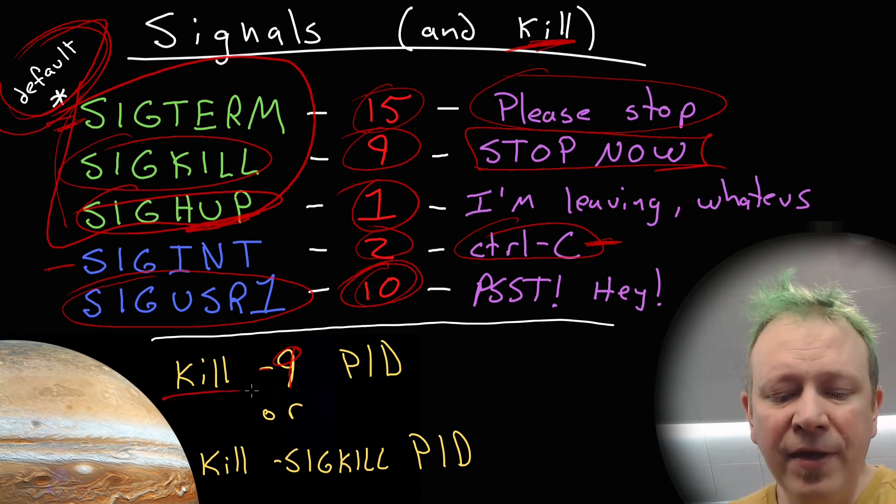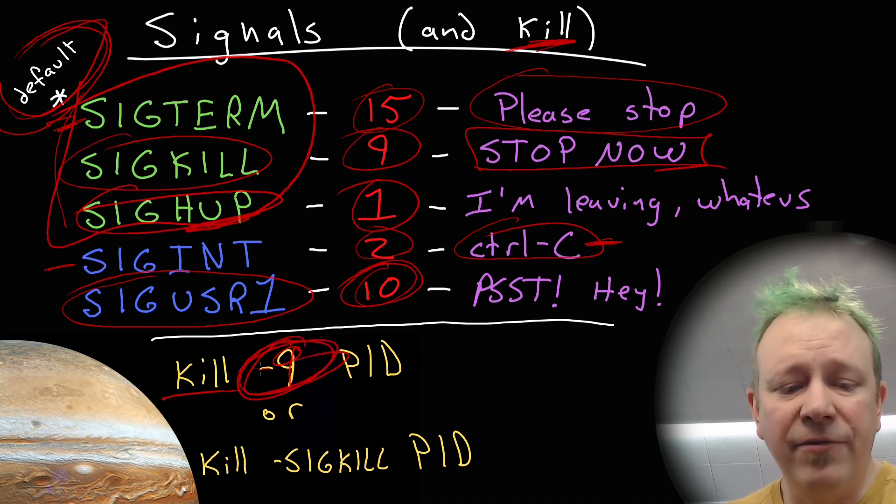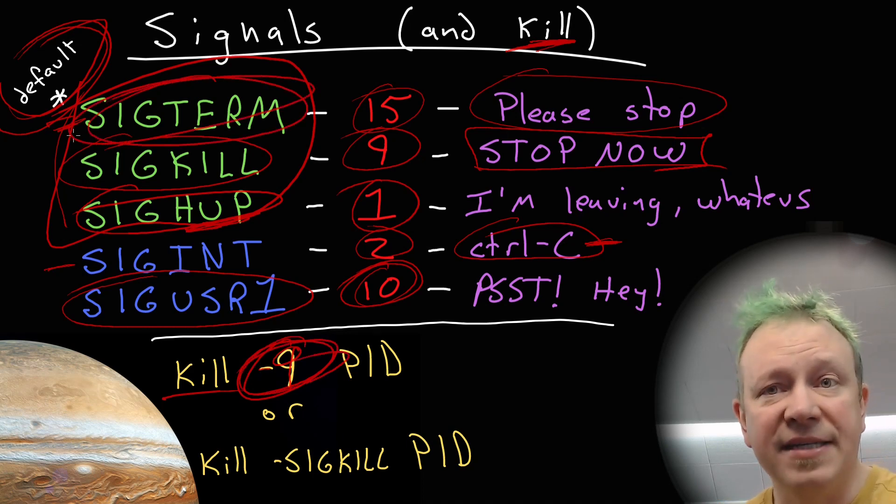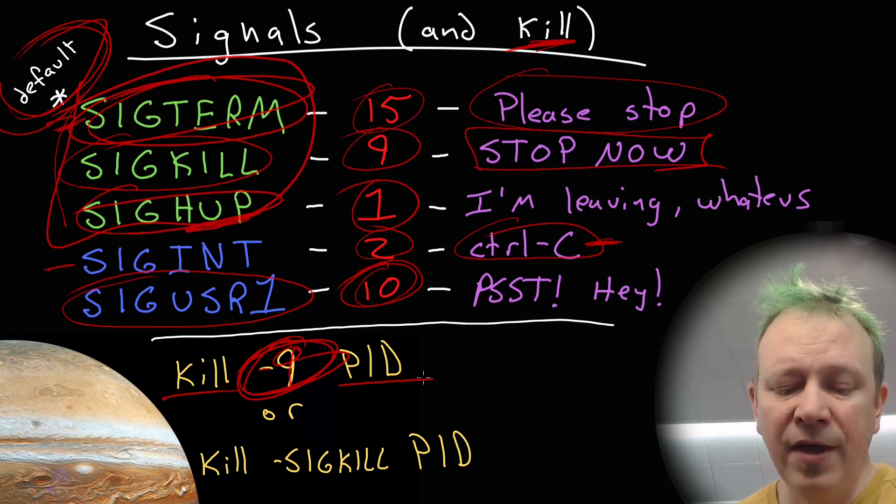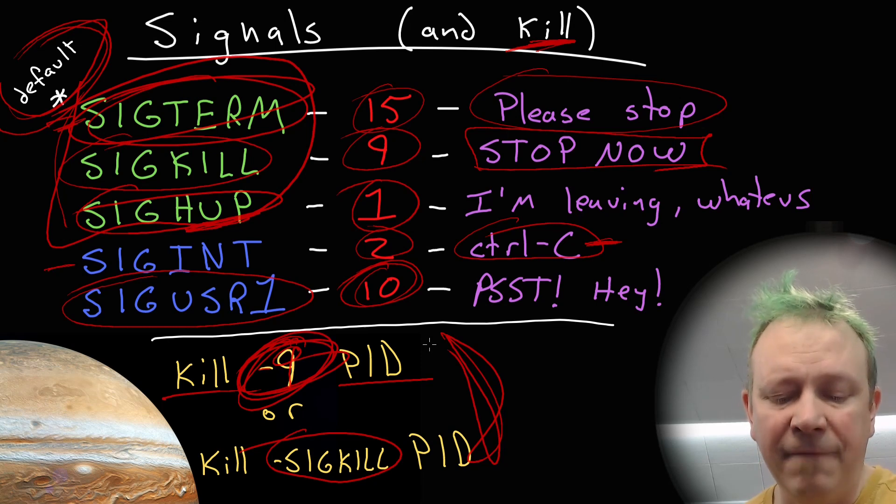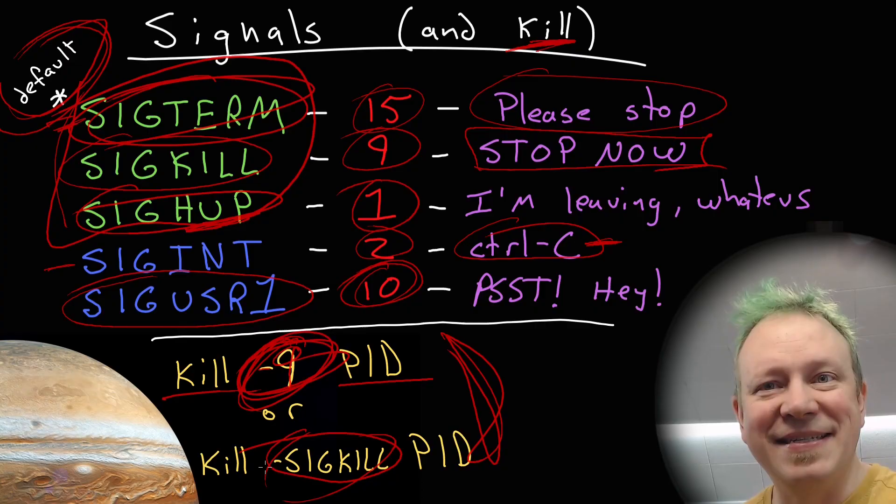To execute these, you do kill, that's the command to send a signal, what signal unless you can leave this off if you actually want to send a SIGTERM because that's the default, but kill minus nine. And then the PID is the process ID of the application or the program that you want to send the signal to. That's how we tell it what application we're sending the signal to. You could also, instead of specifying the number, you could say kill dash SIGKILL and the PID, these are the equivalents. They're the same exact thing. You can specify either by number or by name, and you still need to know that process ID.